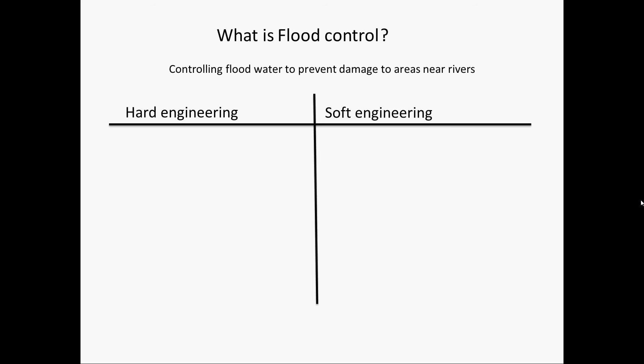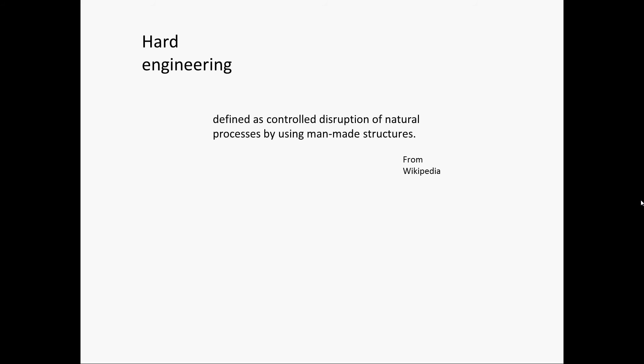We'll be looking at Hard Engineering today and Soft Engineering next week. Hard Engineering, according to Wikipedia, is a controlled disruption of natural processes by using man-made structures — which basically means to change the river using man-made technology.